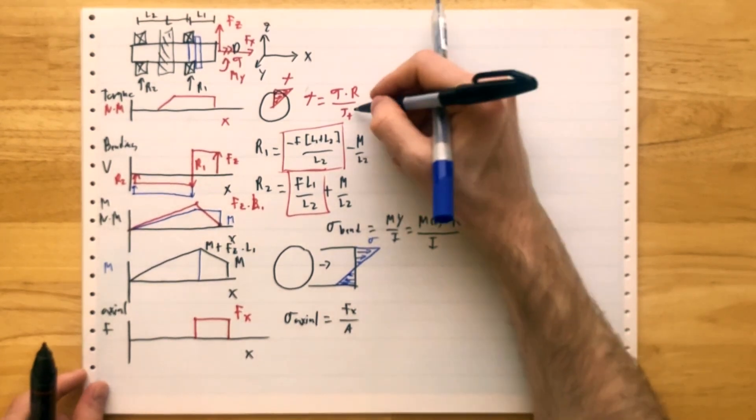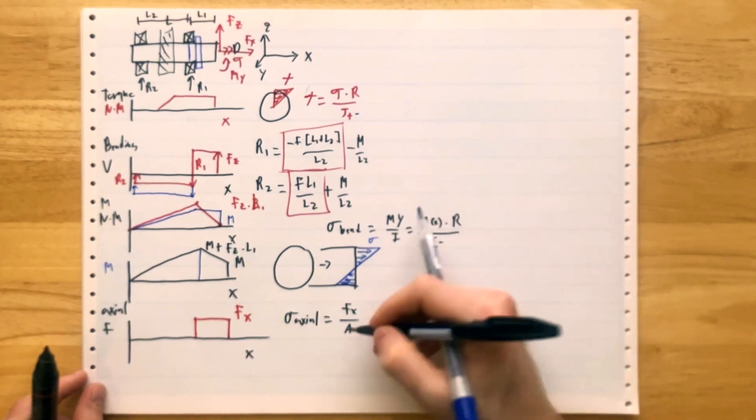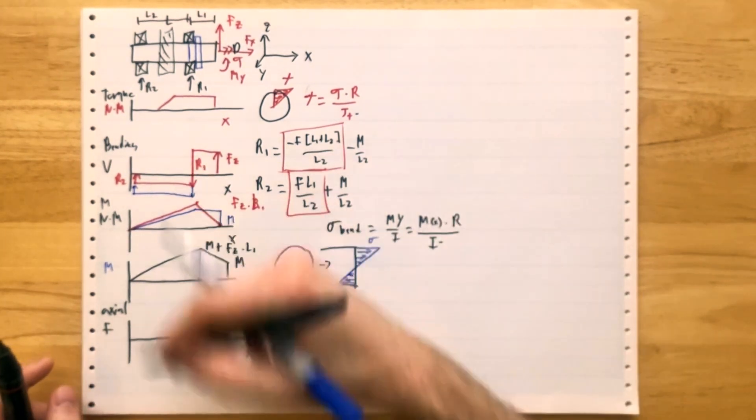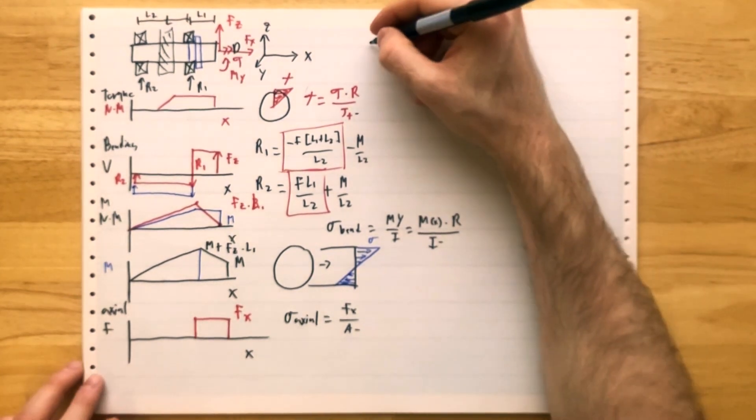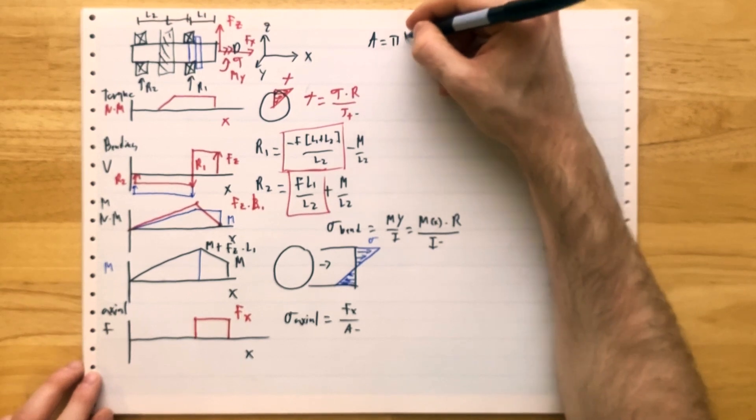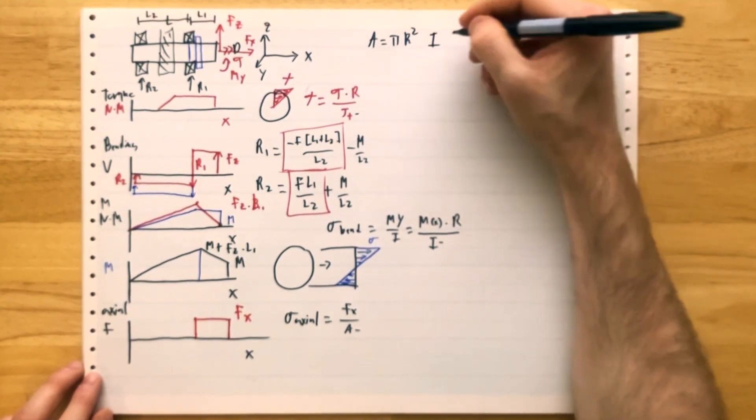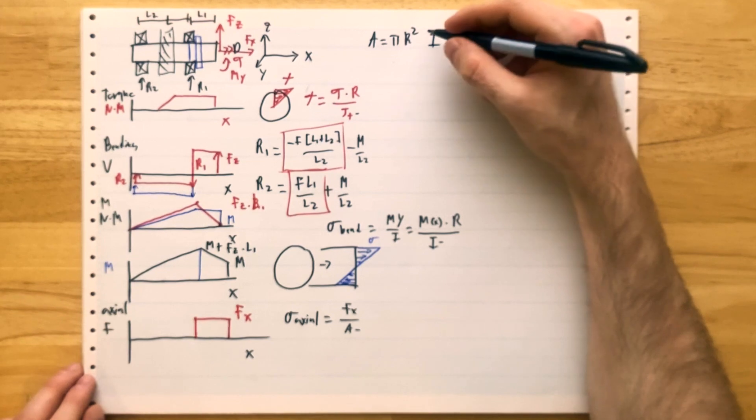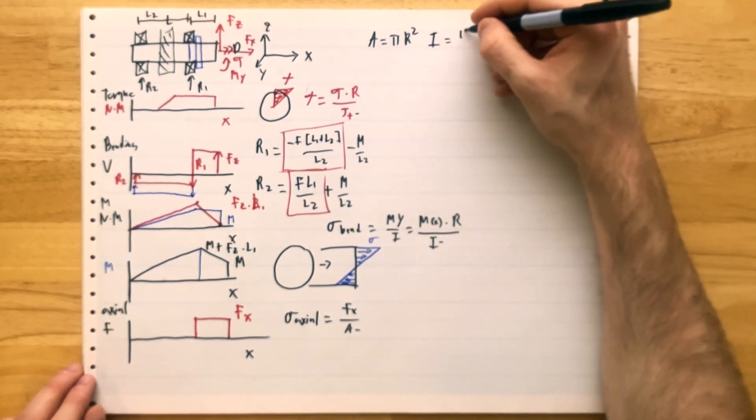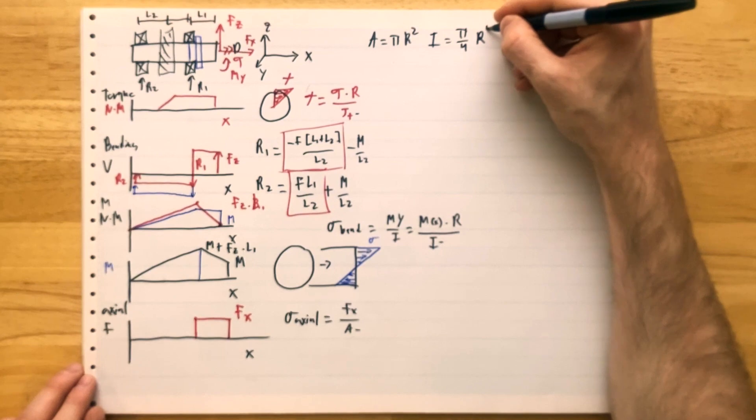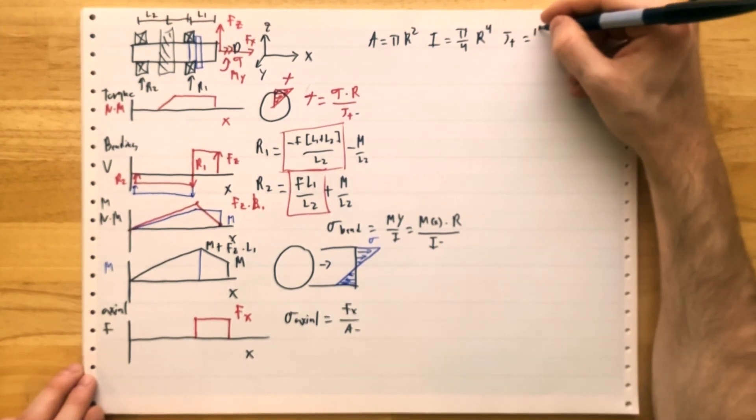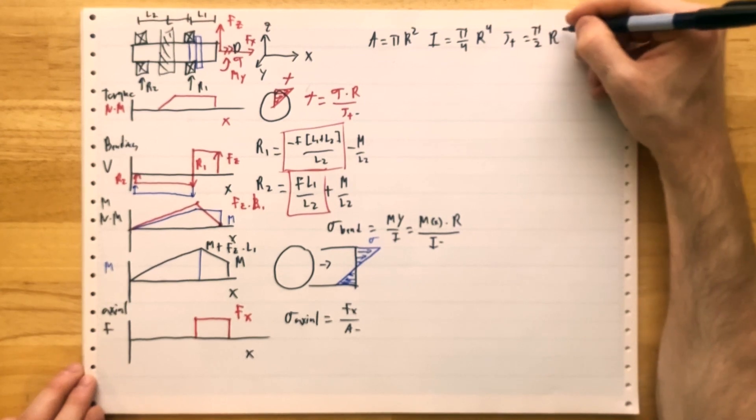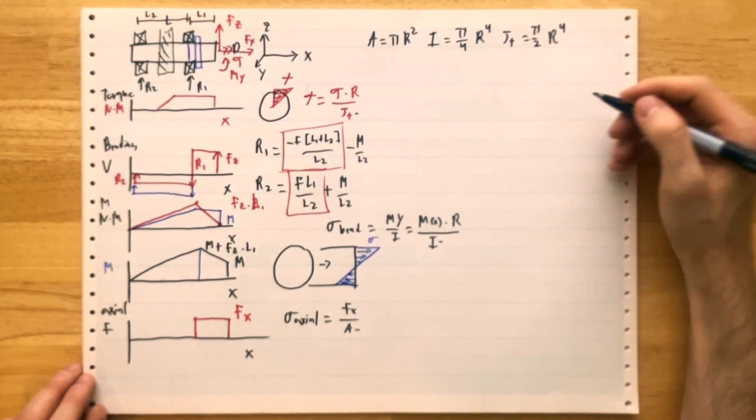So we have a few geometry factors we need to pull out. We need to find the polar moment. We need to find the I. We need to find the area. Now we need to put it all together and find the location of maximum stress. Let's do our geometry first. So the area of a circle is pi R squared. The I, the second moment of inertia of that shaft, is equal to pi by 4 R to the 4. And the polar moment is pi by 2 R to the 4.